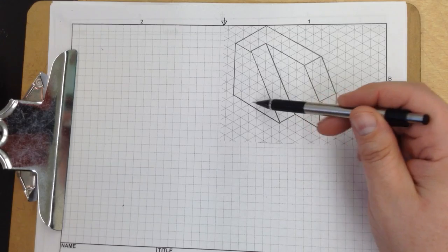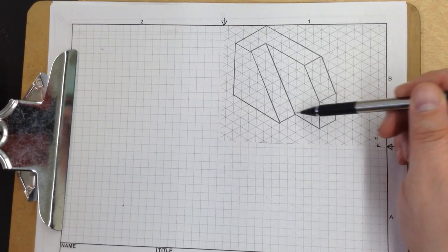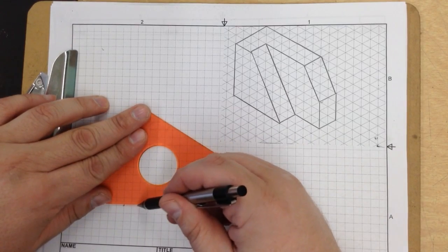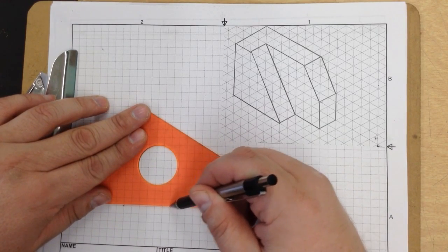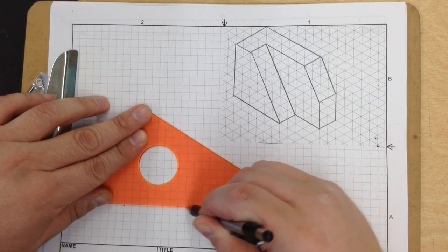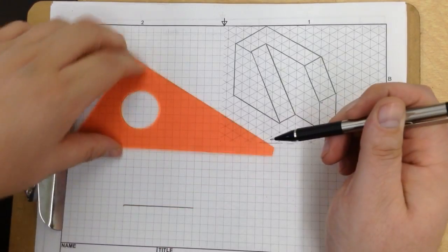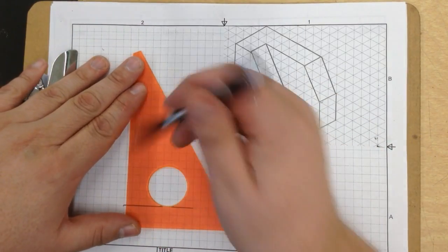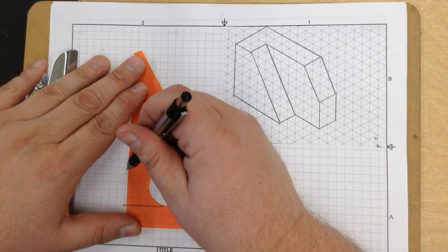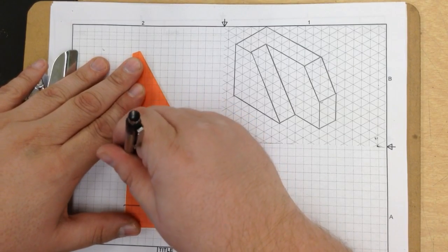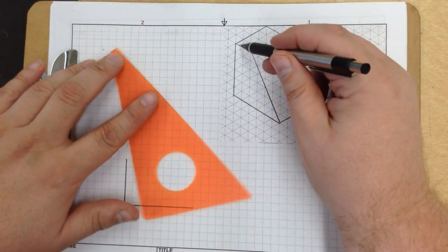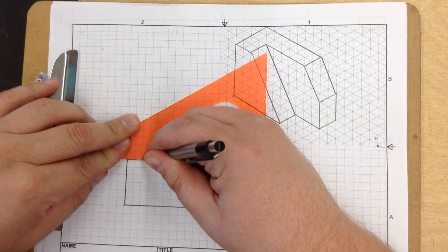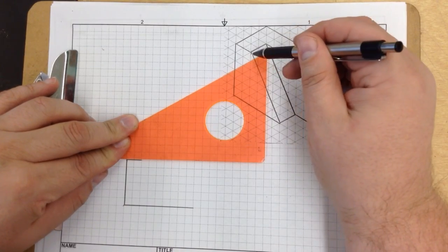And the base of this is 1, 2, 3, 4, 5, 6, 7, 8, 9 long. So make a line 9 long. Then it's 6 tall, okay, that's that line. Then it goes 2 in, okay, that is that right there.